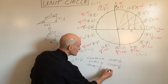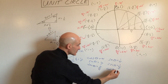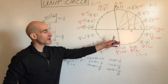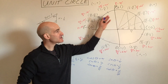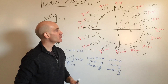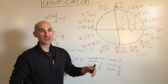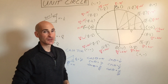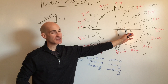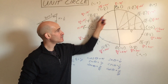The cosecant of theta is 1 over y, the reciprocal of the y-coordinate. The cotangent, instead of being y over x, is x over y. This makes it much easier to find common trig ratios for the common angles we use most — 30, 45, 60, and 90 degrees — by just remembering that cosine is x, sine is y, and tangent is y over x.